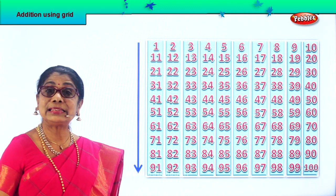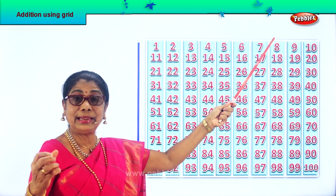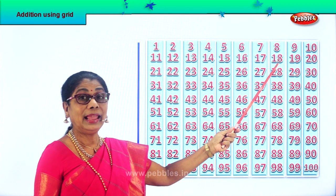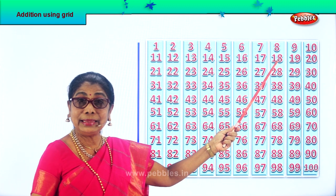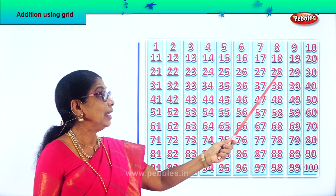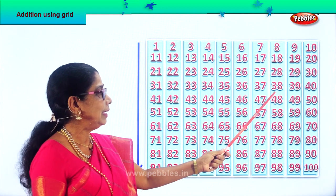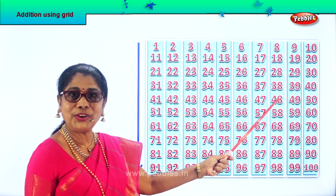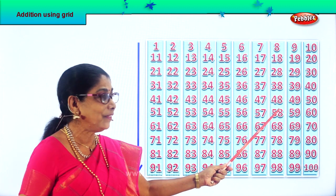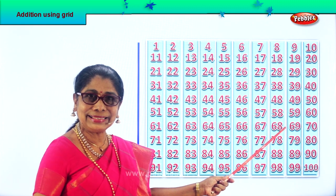Now let's add to number 8. 8 plus 10? 18. 18 plus 10? 28. 28 plus 10? 38. 38 plus 10? 48. 48 plus 10? 58. 58 plus 10? 68.